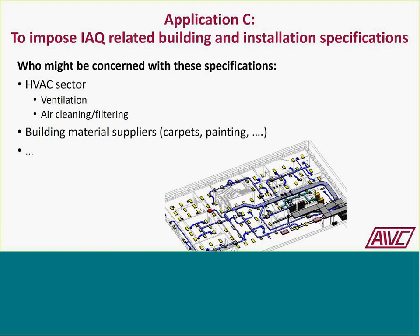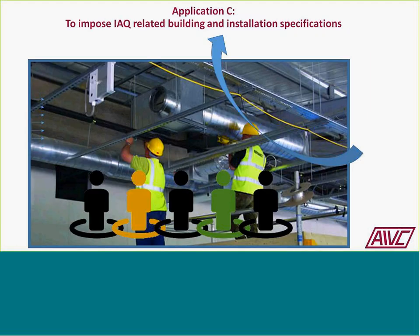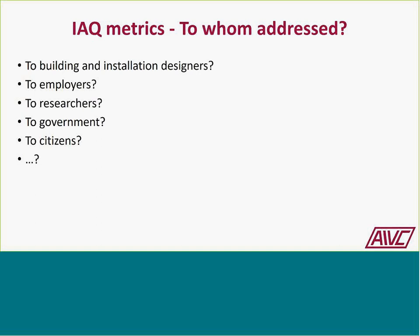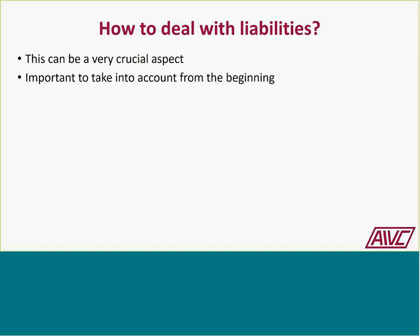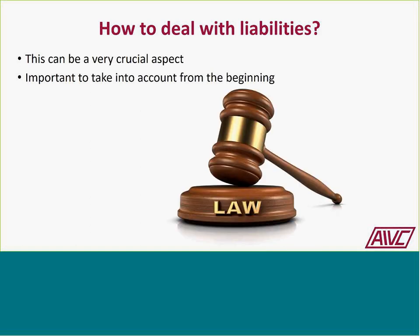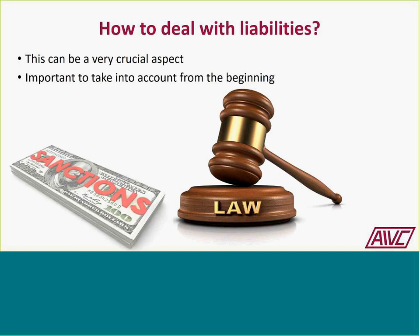IAQ-related requirements may impact specific suppliers. A simplified scheme translates IAQ metric specifications into technical solutions such as ventilation systems. These requirements apply to building and installation designers, employers, researchers, governments, and citizens. Liability is a crucial aspect: you must guarantee that for a given occupancy the building will stay below certain IAQ targets, which must be accounted for from the beginning of a project, with potential legal consequences and sanctions.